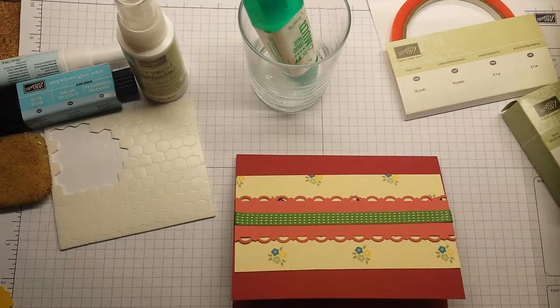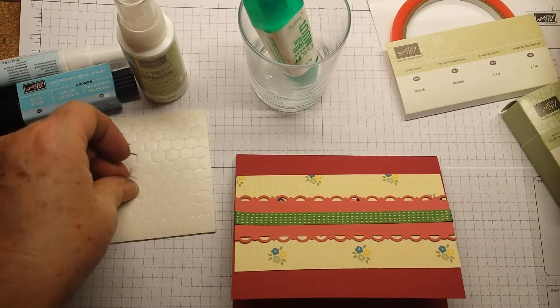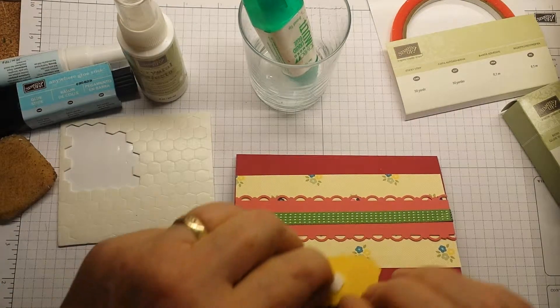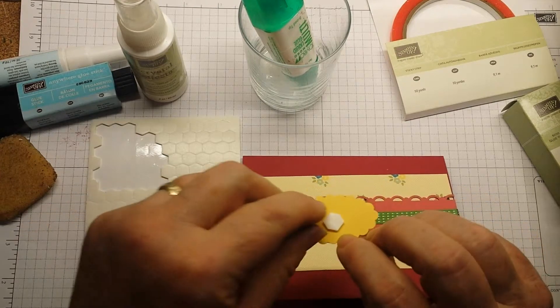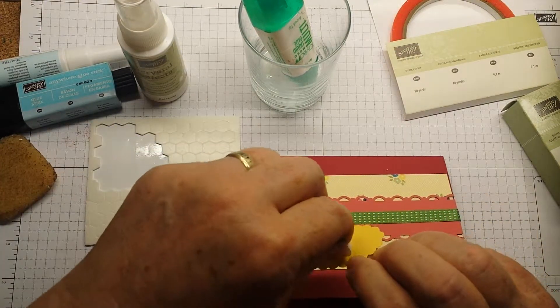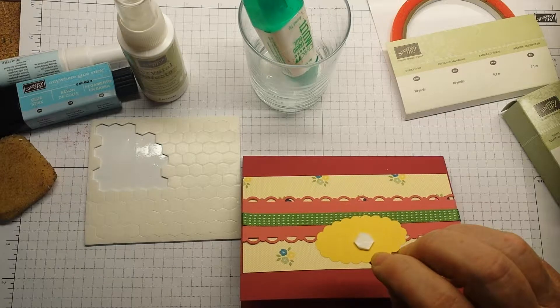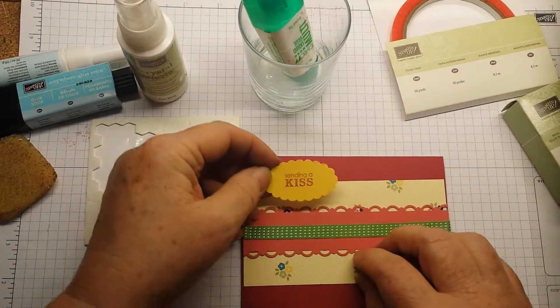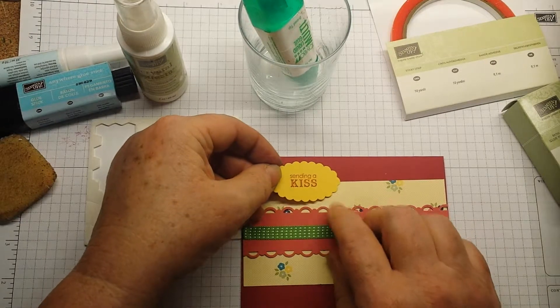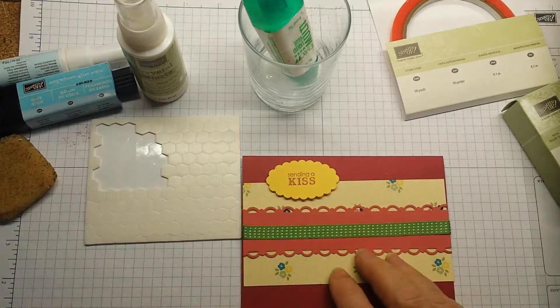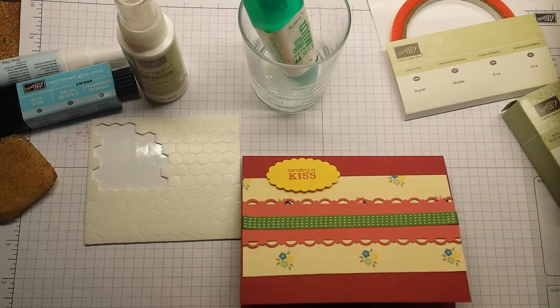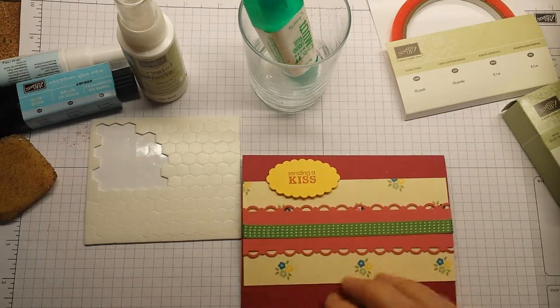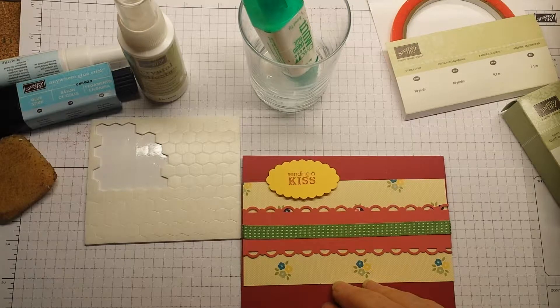Now, if you want to have something stick on but you want it to pop up a little bit, you might want to use our Stampin Dimensionals. They are two-sided and you need to pull them off the sheet and then pull this little backing off. But that will pop your paper up and give a nice little added dimension. So Stampin Dimensionals are really fabulous. That's another thing to use.